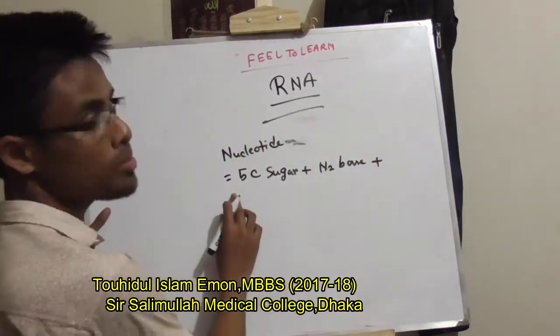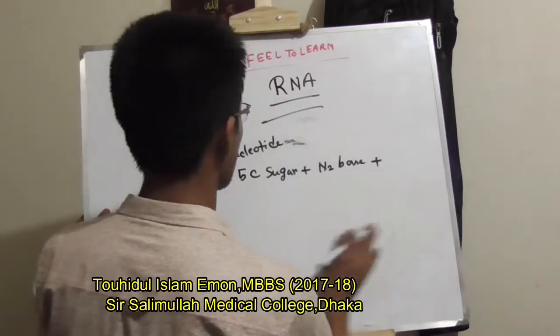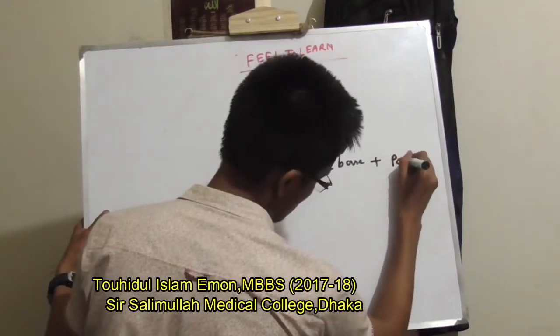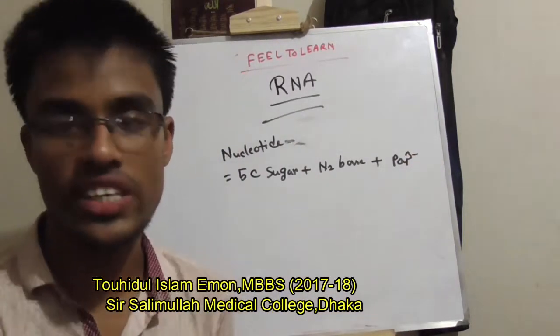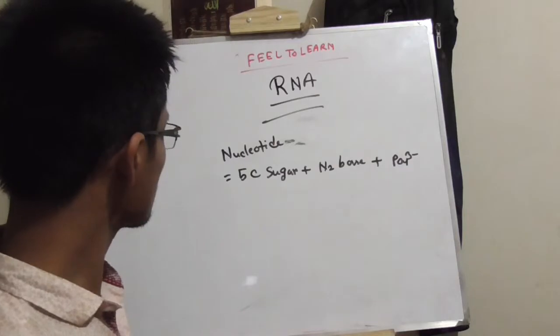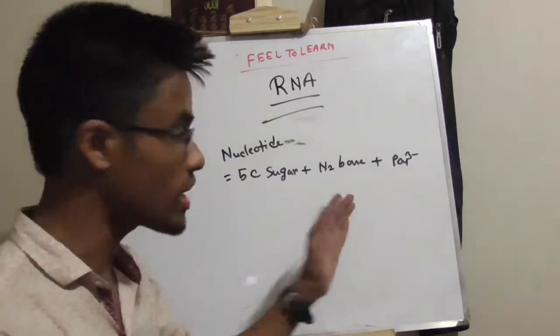There is a nucleotide polymer. So, sugar and nitrogen base plus phosphate. Nucleotide is sugar, nitrogen base, phosphate.